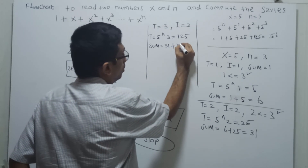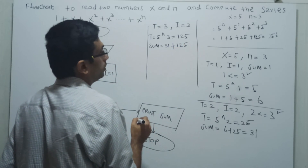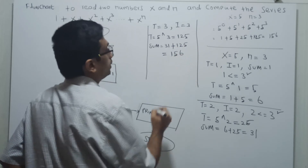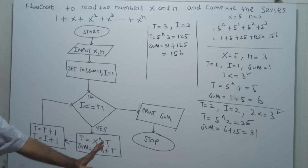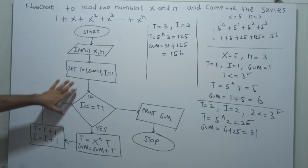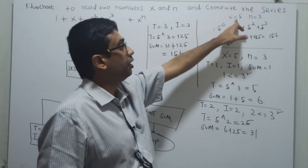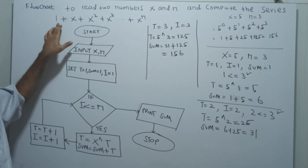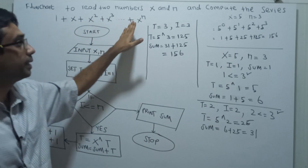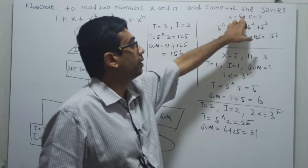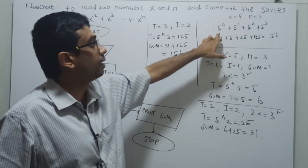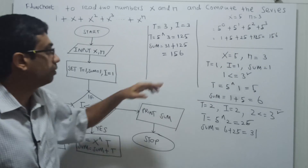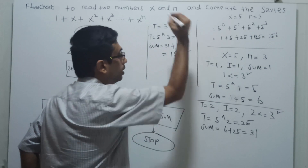31 plus 125 which is equal to 156. So in this way the logic in the flowchart is used to calculate, for the given values x and n, the series x power 0 plus x power 1 plus x squared up to x power n. For x equal to 5 and n equal to 3, the total value is 156. The logic is working properly.